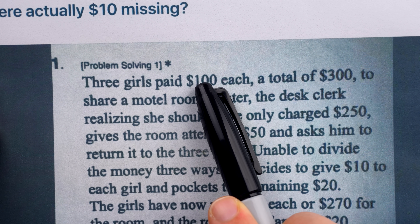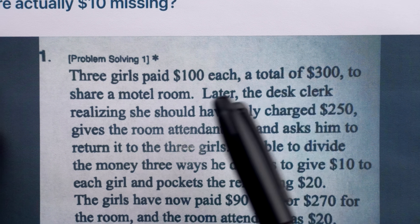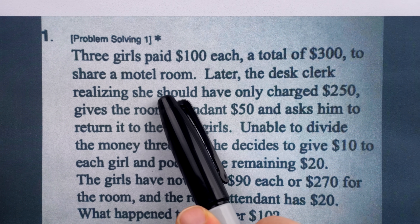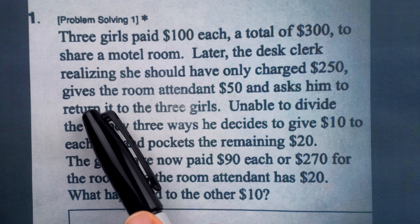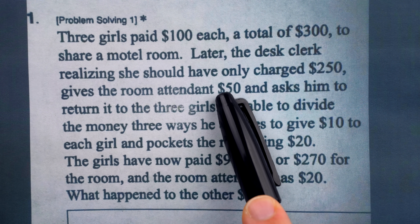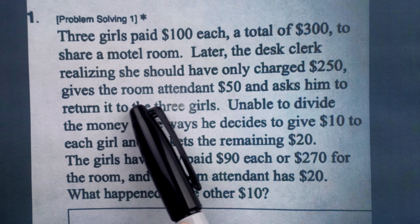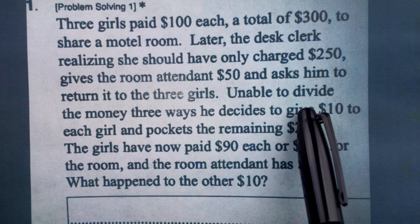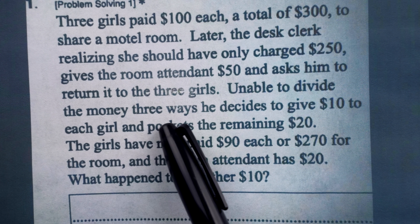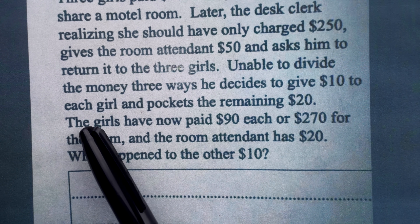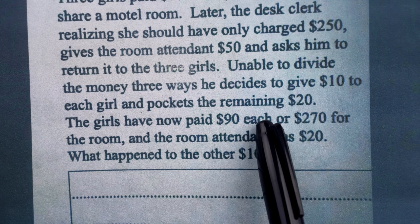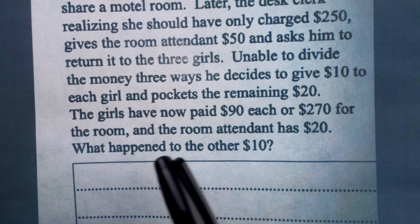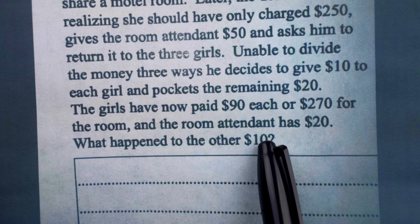It says: three girls paid $100 each, a total of $300, to share a motel room. Later, the desk clerk, realizing she should have only charged $250, gives the room attendant $50 and asks him to return it to the three girls. Unable to divide the money three ways, he decides to give $10 to each girl and pockets the remaining $20. The girls have now paid $90 each, or $270 total, for the room. And the room attendant has $20.